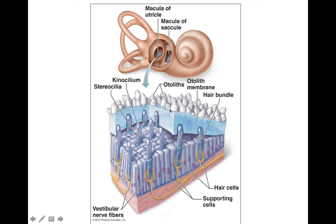As the otoliths change position, that changes your sensitivity and in some cases can create sensations of vertigo. Head positioning with occupational therapy is actually a significant treatment, where you try to roll those otoliths back into place so the hairs can reposition correctly. This covers the saccule and the utricle and their role in monitoring linear acceleration.